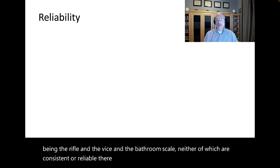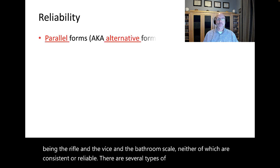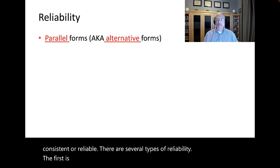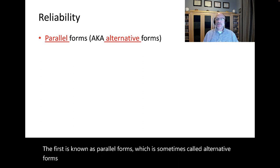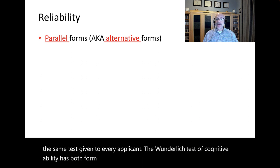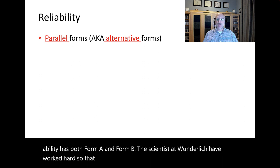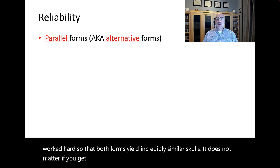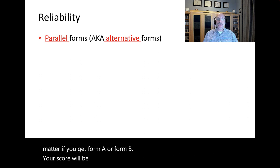There are several types of reliability. The first is known as parallel forms, which is sometimes called alternative forms reliability. This is computed as the correlation between two versions of the same test given to every applicant. The Wunderlich test of cognitive ability has both form A and form B. The scientists at Wunderlich have worked hard so that both forms yield incredibly similar scores. It does not matter if you get form A or form B.